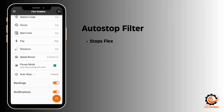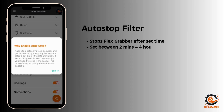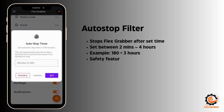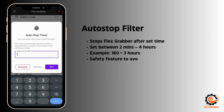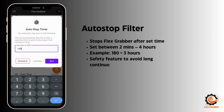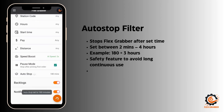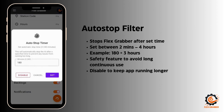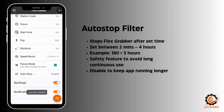Now we have the auto stop filter. This is a precaution to avoid any issues from running Flex Grabber for too long. You can set a stop time — for example, entering 180 means 3 hours, so the app stops after 3 hours of running. This is very safe. If you want to keep the app running longer, you can also disable this filter easily.